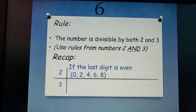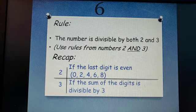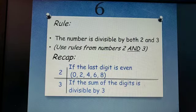If the number is divisible by three, we add the sum of the digits and the answer will be in our three times table.